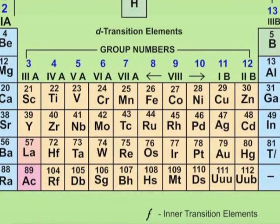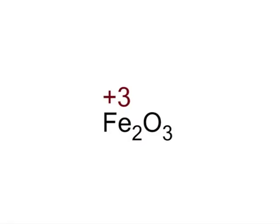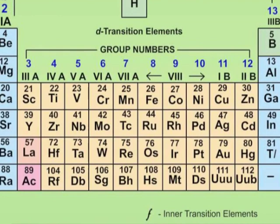Let us recall the oxidation number of another element from the first transition series of the D block. Consider iron — in Fe₂O₃, the highest oxidation state is plus 3. It is known that beyond group 7, no higher oxide of iron above Fe₂O₃ is known.